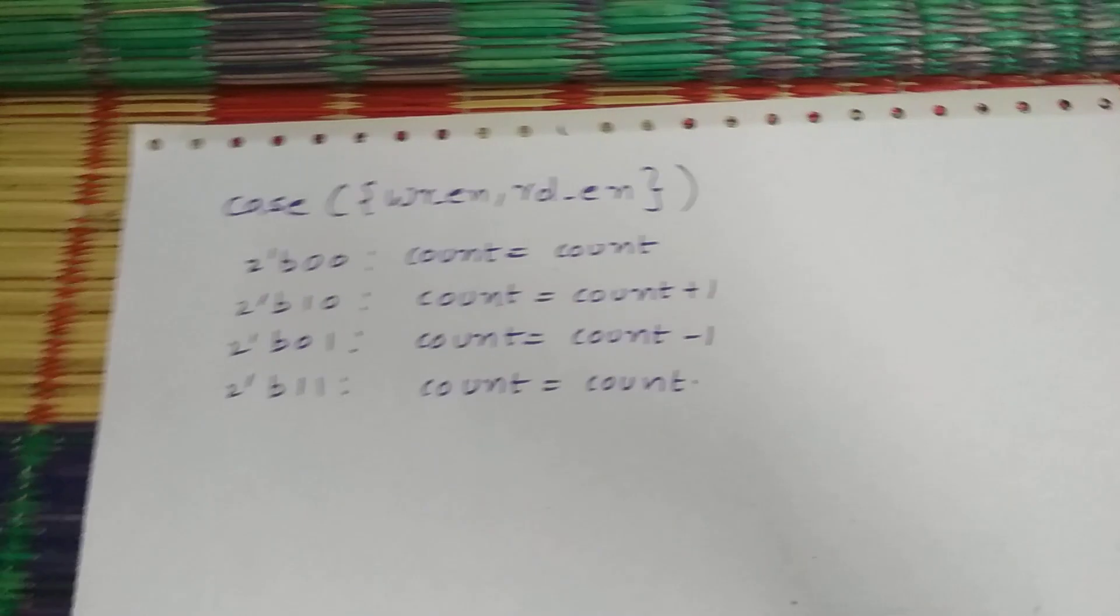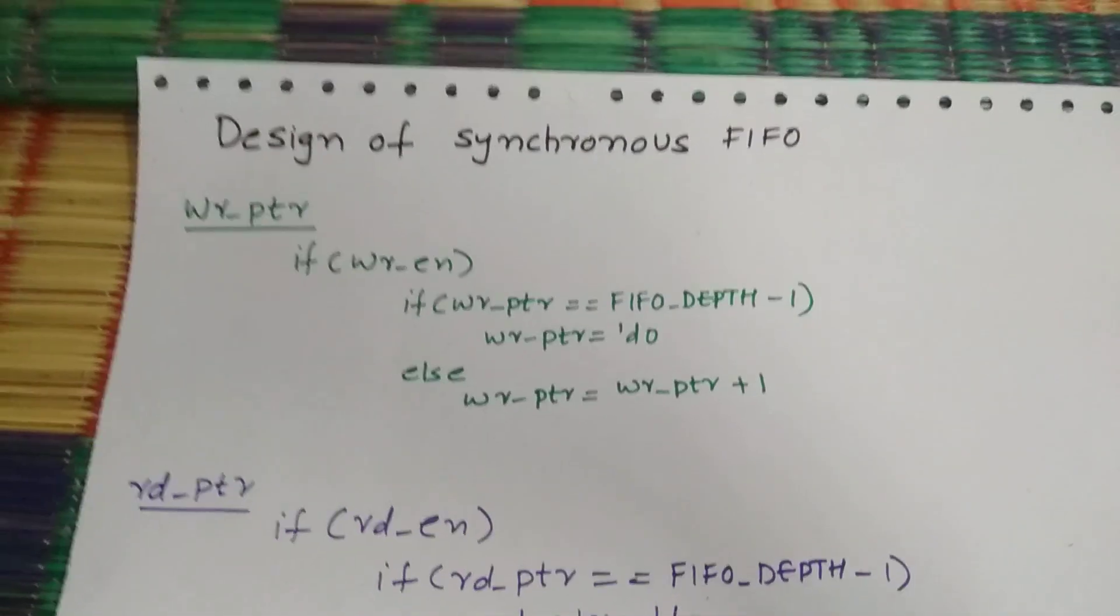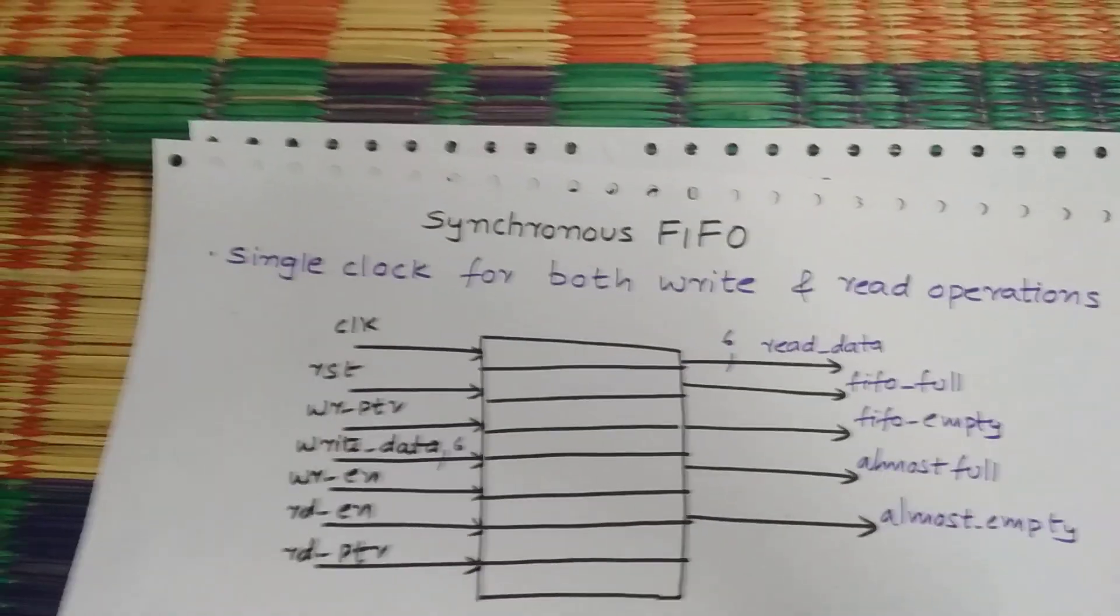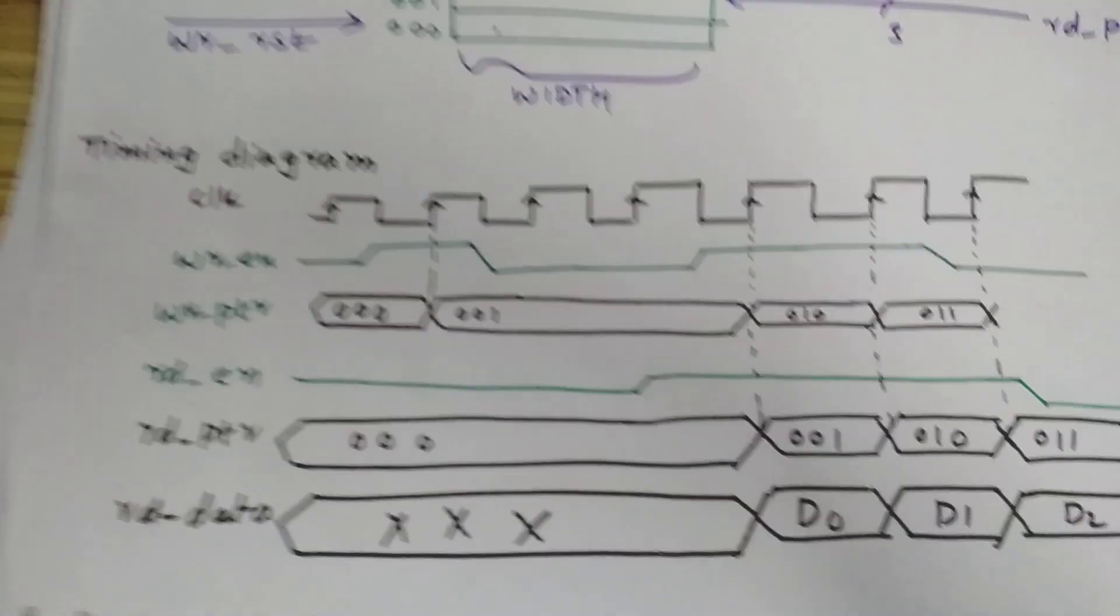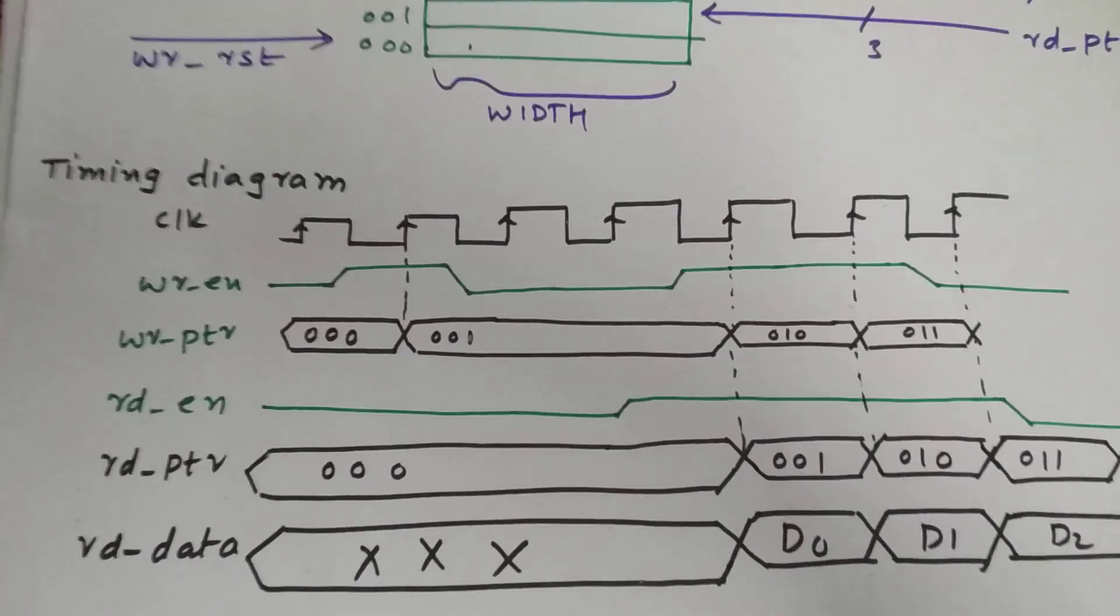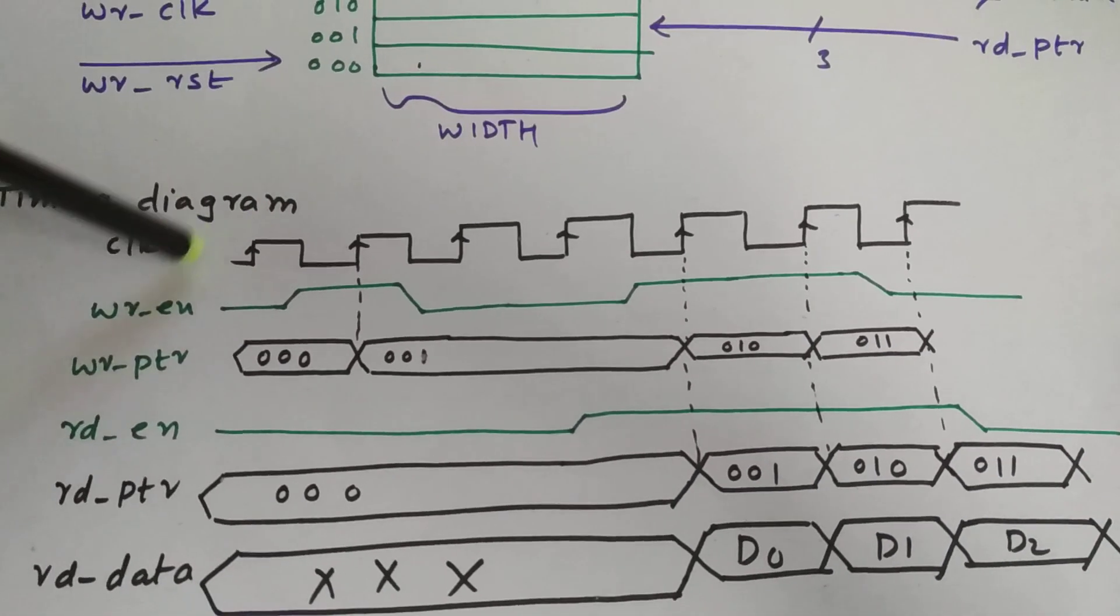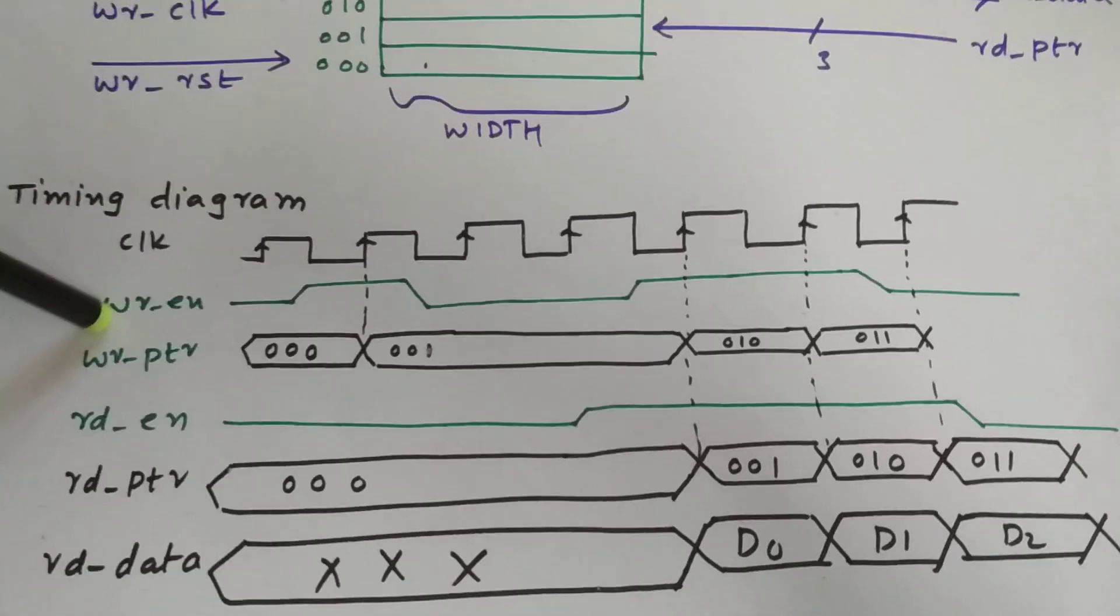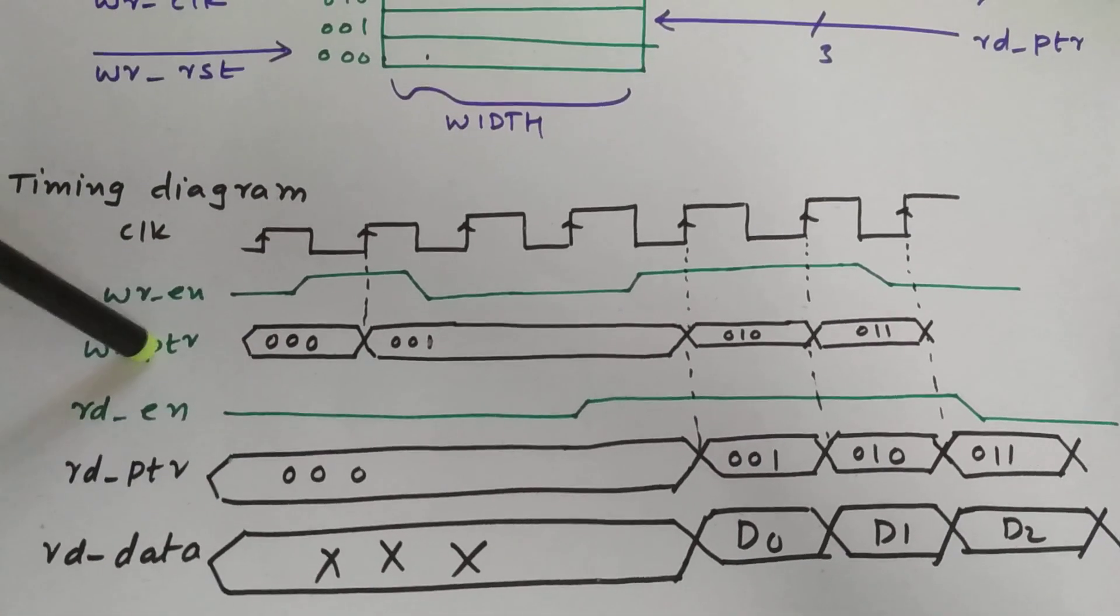This is how we are going to design a synchronous FIFO. I'm also going to explain you about the timing diagram. Here's the timing diagram of synchronous FIFO. The clock is there. Whenever the write enable is high, you're going to write - the pointer will be incremented by one.